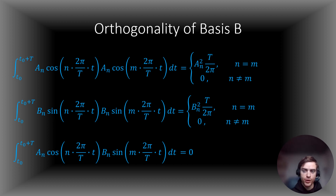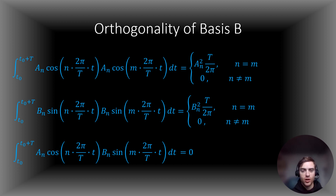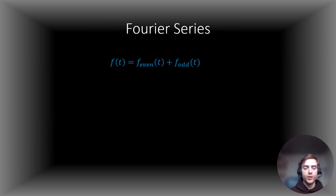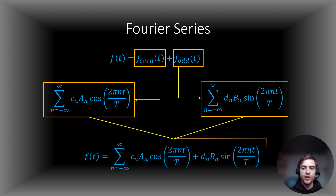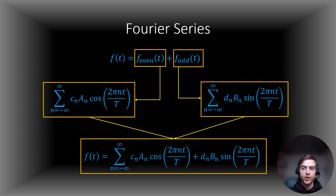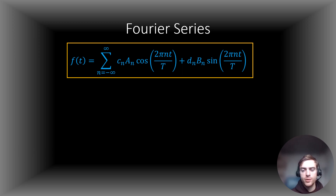On this slide, I'm going to show you that the basis vectors we chose are indeed orthogonal with respect to the inner product we chose. As you can see, all of the even cosines are orthogonal, all of the odd sines are orthogonal, and all of the cosines are orthogonal to all of the sines. The magnitudes of the cosines are all a_n multiplied by the square root of T over 2 pi, and the magnitudes of the sines are b_n multiplied by the square root of T over 2 pi. And now we can express an arbitrary function f of t as the sum of even and odd components, expressed as a linear combination of the respective even and odd basis functions we have chosen.